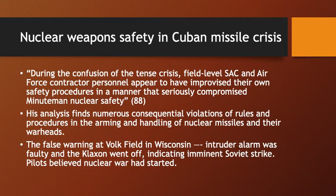He finds numerous consequential violations of rules and procedures in the arming and handling of nuclear missiles and their warheads. The incident at Volk Field in Wisconsin is a fascinating example: an intruder alarm went off on the airfield, but instead of signaling an intruder, the klaxon went off indicating an imminent Soviet strike. Pilots mobilized to their aircraft and were rolling, believing nuclear war had started. Fortunately, an official made a redundant backup check and discovered it was an error.